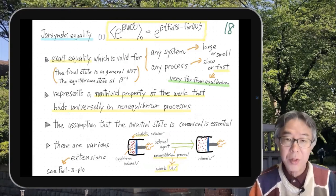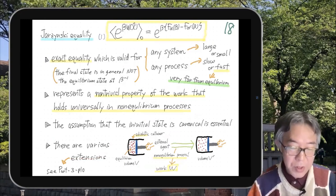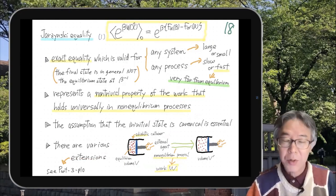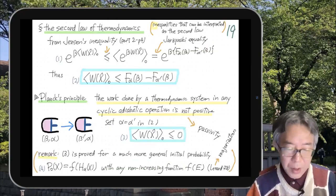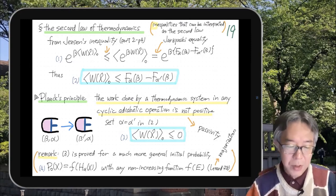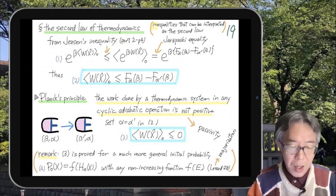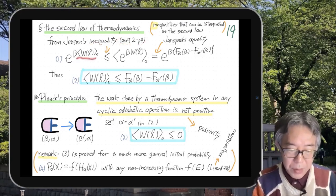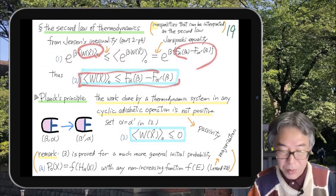We considered the Hamiltonian mechanics case, but there are various extensions. In part three of this lecture we will discuss the Jarzynski equality in the setting of a stochastic process that mimics isothermal processes. Since this is part one, I want to discuss briefly one application of this equality: an inequality that can be interpreted as the second law of thermodynamics. There is an inequality called Jensen's inequality — which we will discuss in part two — which says that e^{β⟨W⟩} ≤ ⟨e^{βW}⟩. Combined with the Jarzynski equality, this gives a rigorous inequality.